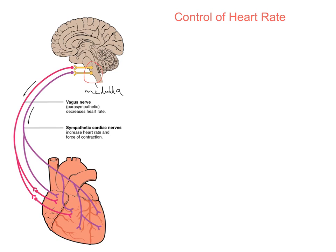Ultimately, the changes to the heart rate are controlled by this portion of the brain. There are two centres within the medulla oblongata. There is one centre that increases the heart rate, and it's linked to what's called the sinoatrial node by the sympathetic nervous system.